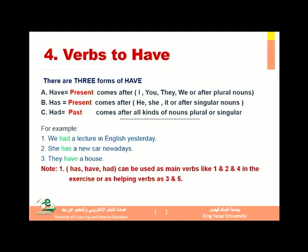Now what about 'has'? Has, when the sentence is in the present, is used after the following pronouns or after any singular noun. For example: she has a pen, he has a pen, it has a pen, the student has a pen, the boy has a pen, the girl has a pen, or any singular noun. Like Ali has a pen, Layla has a pen. فإذاً بعد الضمائر المفردة لما يكون زمن الجملة مضارع نستخدم 'has' وبعد أي كلمة مفردة.